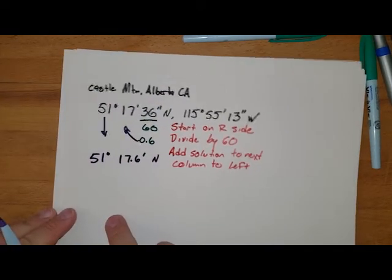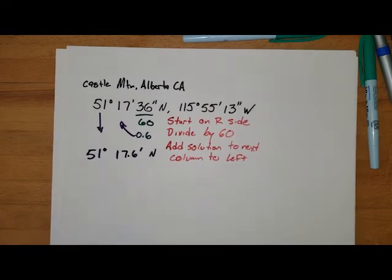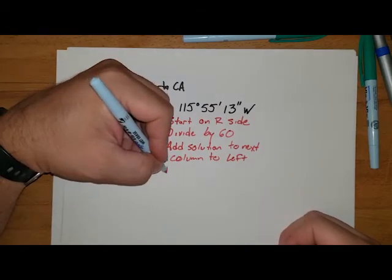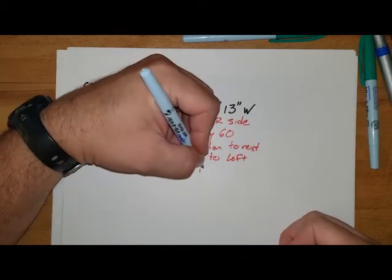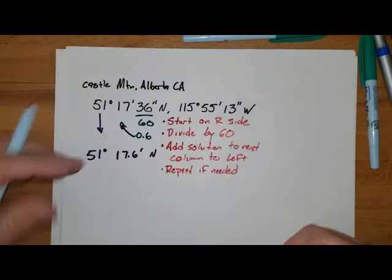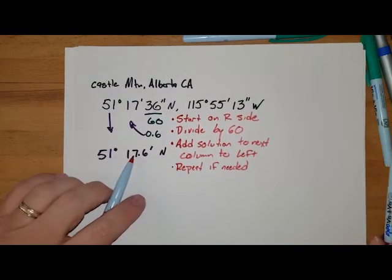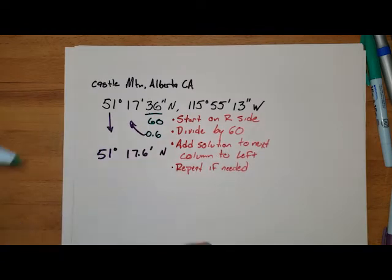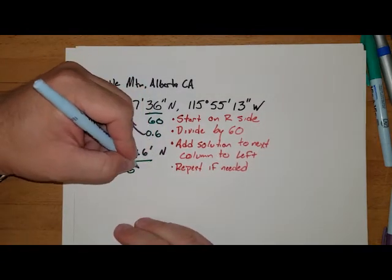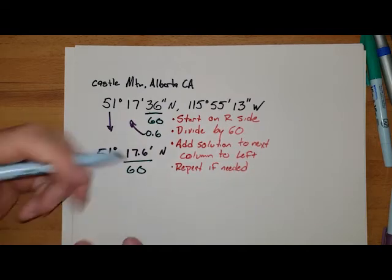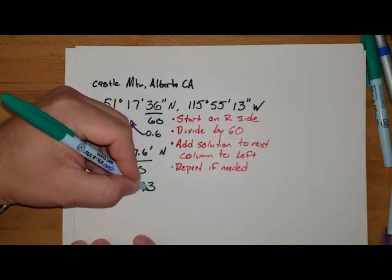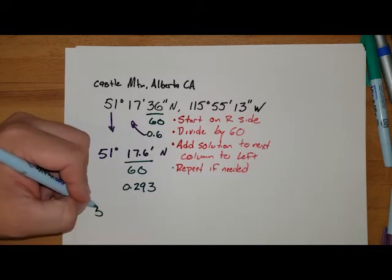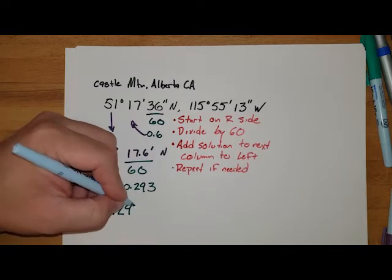And I want to always remember that direction that we're following, okay? Now the last step: so we started on the right side, we divide by 60, we add that solution to the next column, and then repeat if needed. In this case, we still have minutes and degrees, and so we do need to redo the process. So I'm going to take this particular value, I'm going to divide it by 60, that's going to give me 0.293. I'm going to take that value, add it to the next column over, and my solution is 51.293 degrees to the north.